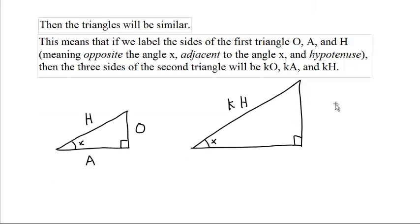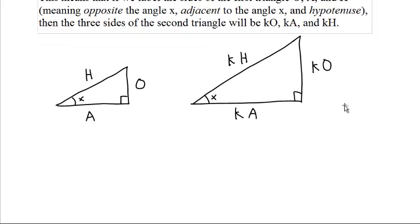The other will be k times H, k times A, and k times O. They're similar triangles, so all three of those sides are just the same scale constant k times those three sides. Fine.